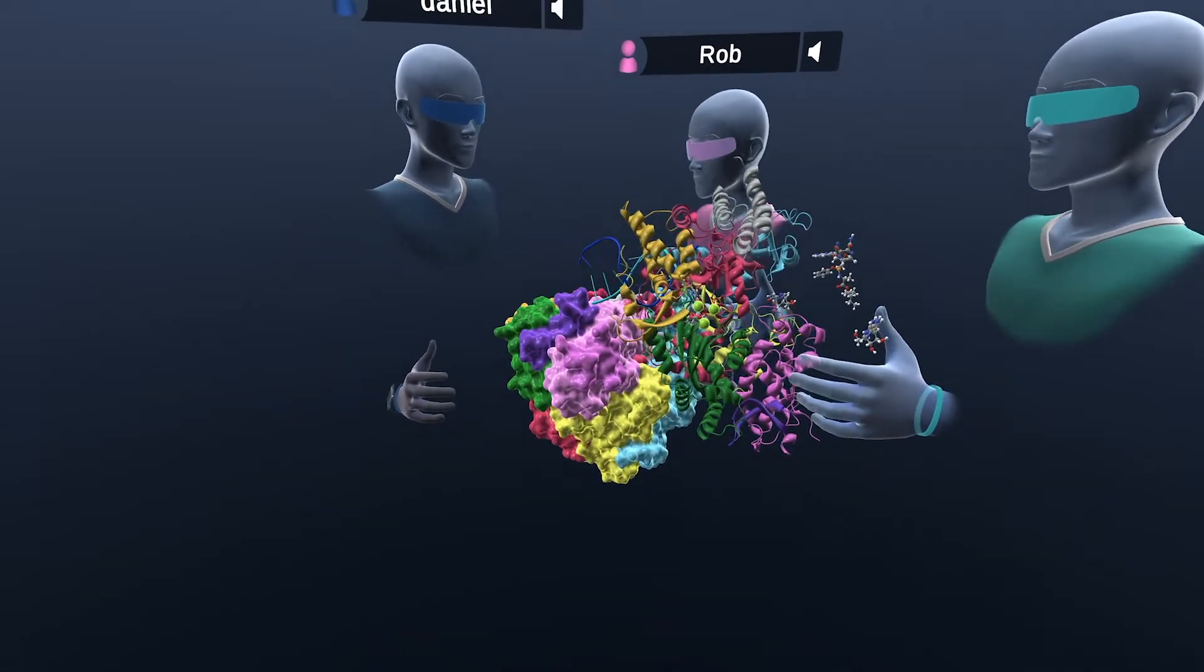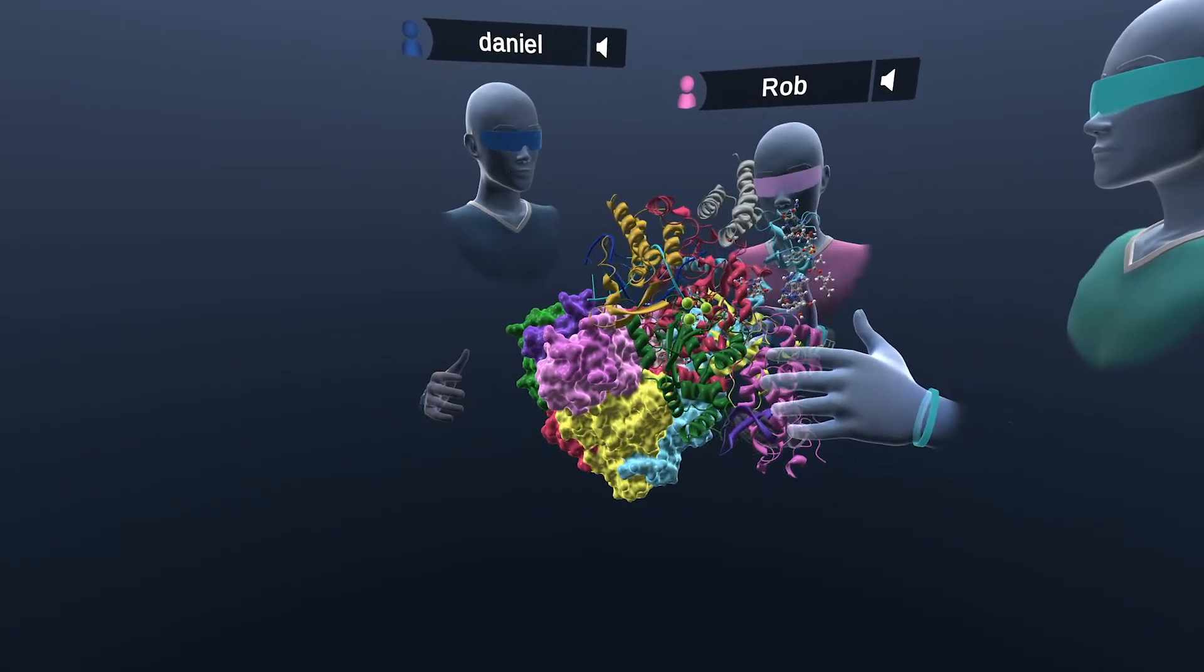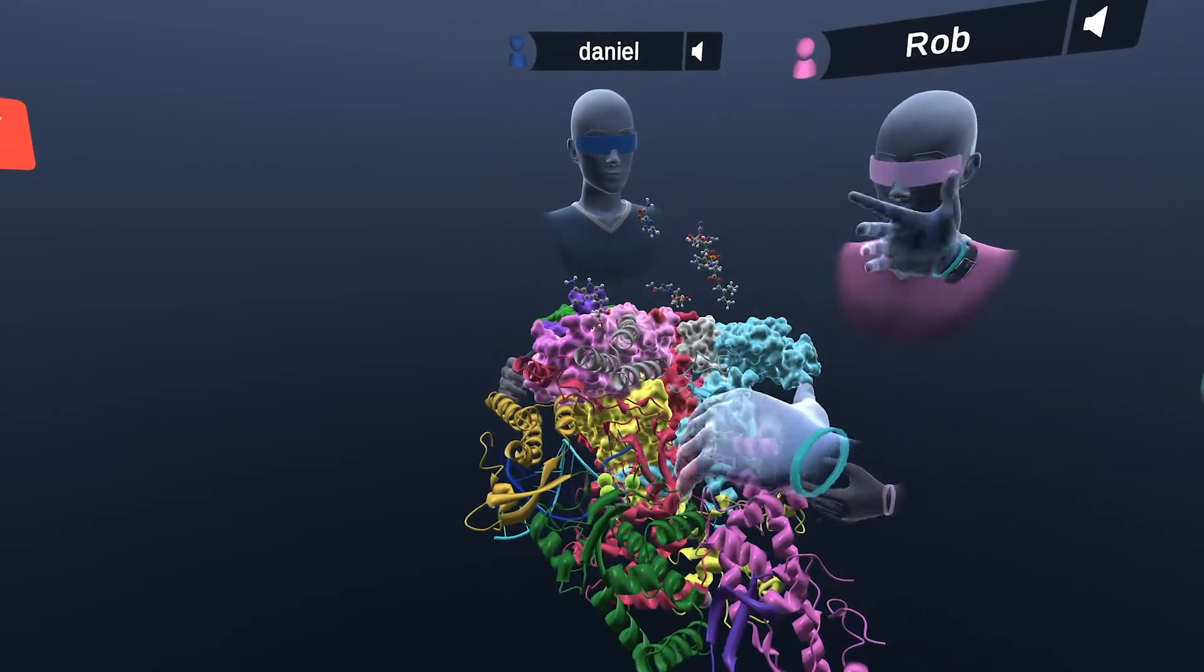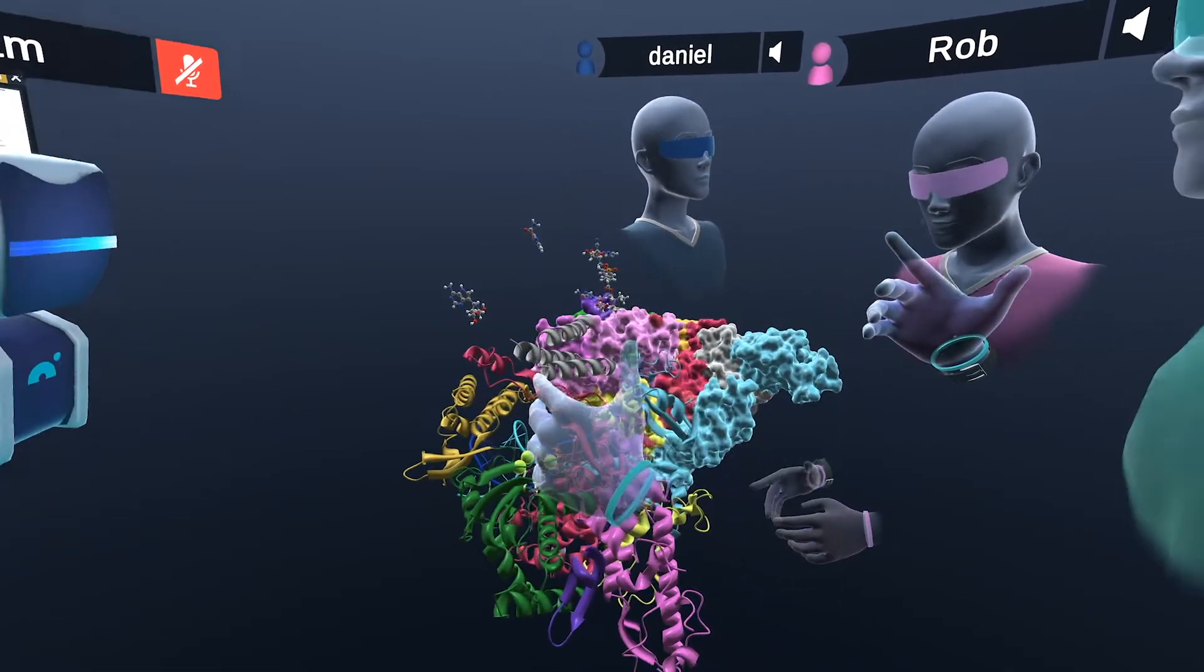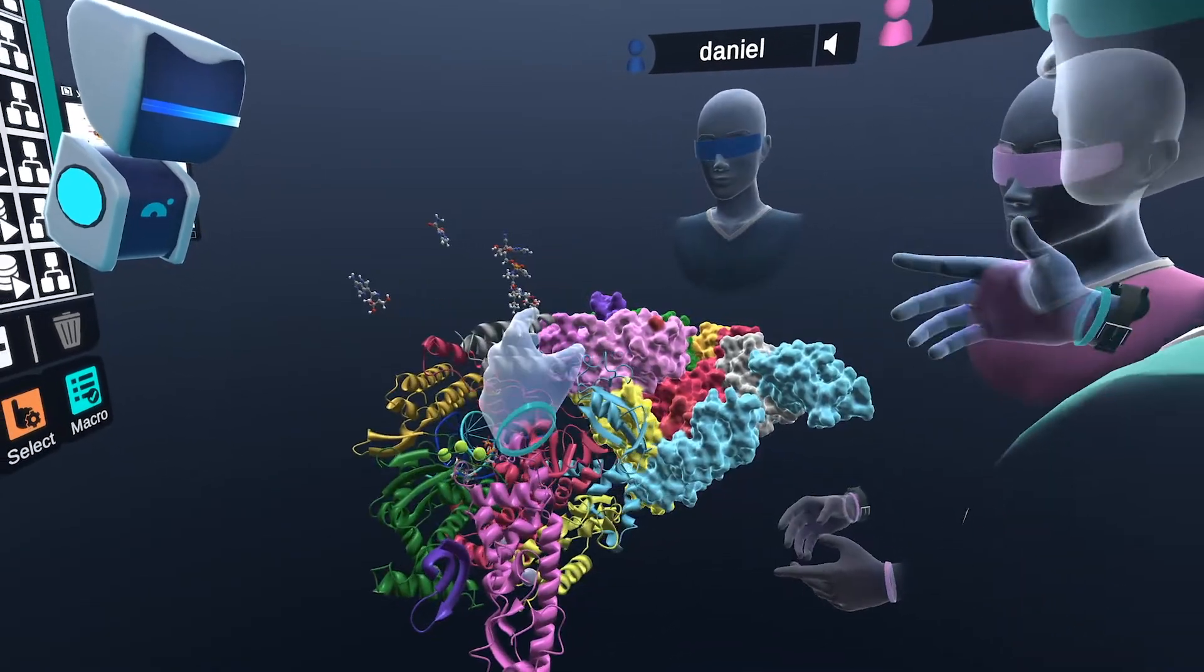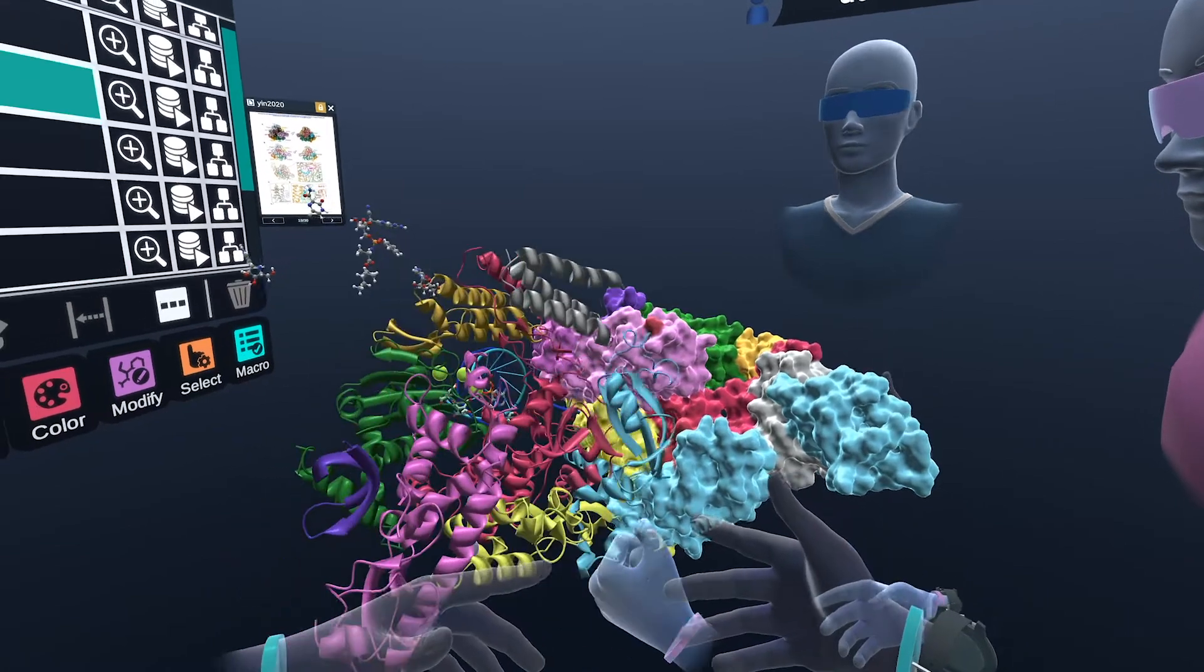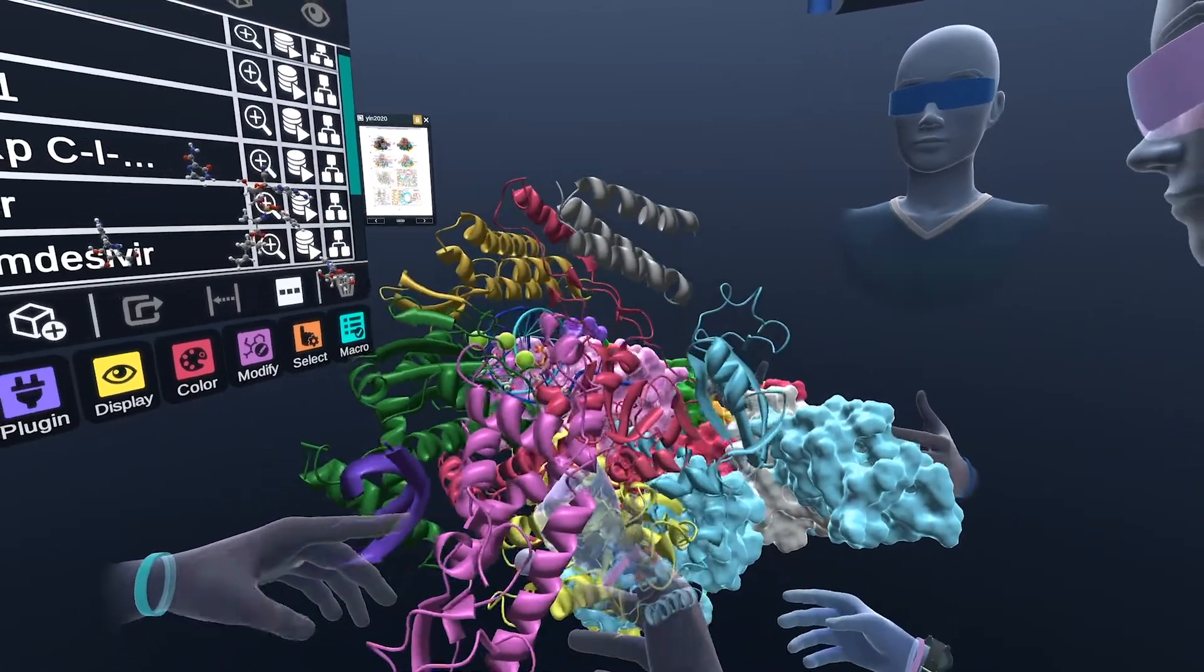Before we jump into the drugs, I wanted to mention that for those of you who aren't familiar with what an RNA-dependent RNA polymerase is, this is an essential piece of an RNA virus replication machinery. Any virus that uses RNA instead of DNA as its genetic material needs to have an RNA-dependent RNA polymerase in order for it to replicate itself inside of human cells. So this is a super important drug target for RNA viruses like SARS-CoV-2.